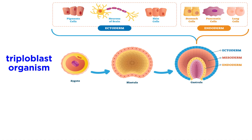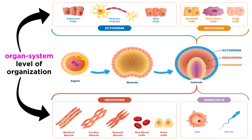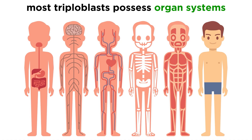Now, unlike the cnidarians, most animals are triploblastic, meaning they have a third embryological layer sandwiched between the ectoderm and the endoderm, called the mesoderm. This layer gives rise to supportive cells, contractile cells, and blood cells. Most triploblastic animals have an organ system level of organization.